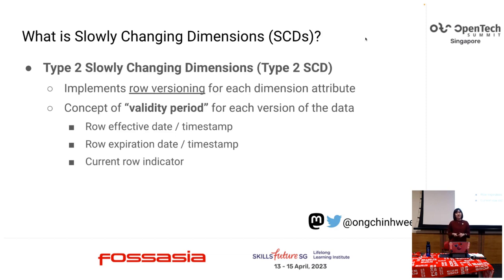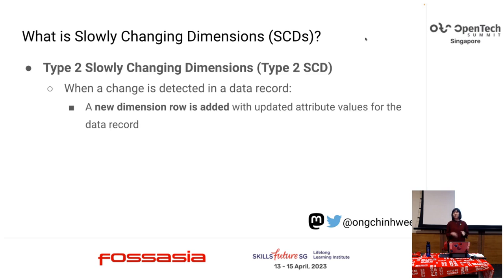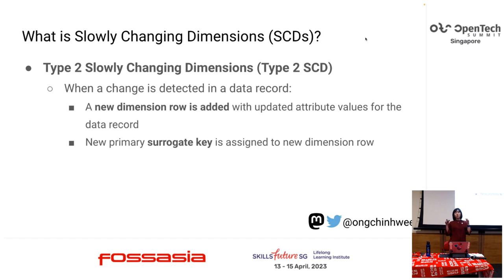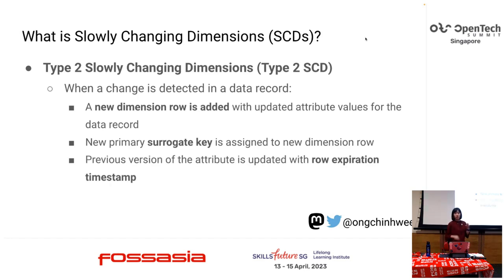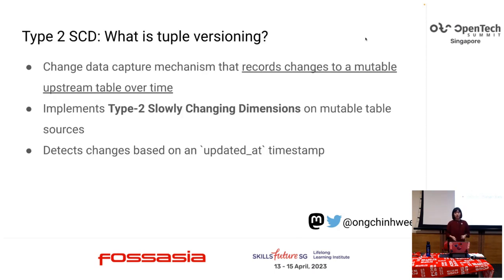Type 2, which is the focus of this talk, implements row versioning for each dimension attribute. For each version of a record, you have a validity period: a row effective date, a row expiration date, and sometimes a current row indicator. When a change is detected, instead of overwriting the record, you create a new dimension row with updated attribute values and a new surrogate key, then update the previous row's expiration timestamp. This preserves history.